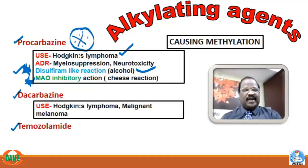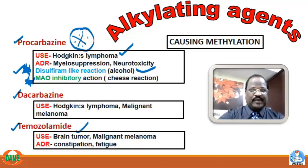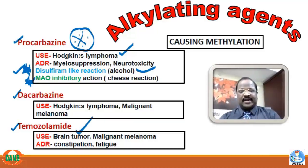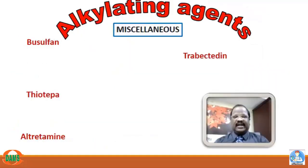Dacarbazine is useful mainly for Hodgkin's lymphoma and malignant melanoma. Temozolomide is highly lipid-soluble, so it is useful for brain tumors and also for malignant melanoma. Important adverse effects of temozolomide include myelosuppression, constipation, and fatigue.